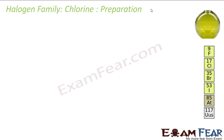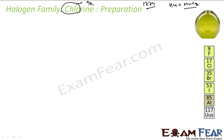Chlorine was discovered in 1774 by reacting HCl and MnO2 in the lab. The gas formed was green in color — greenish yellow. The word chlorine came from its Greek word 'chloro', meaning greenish yellow.